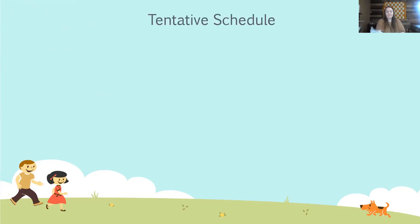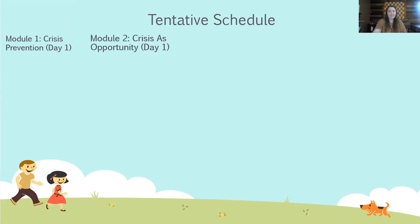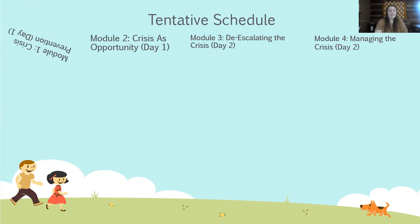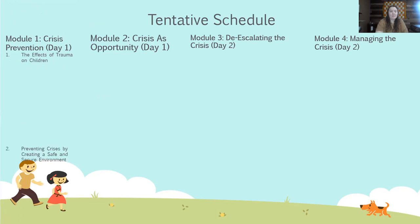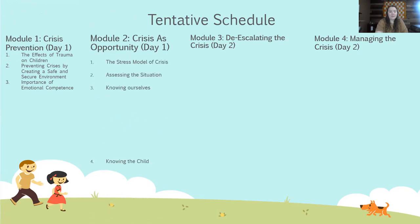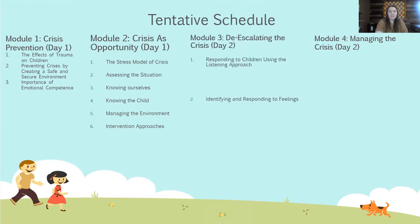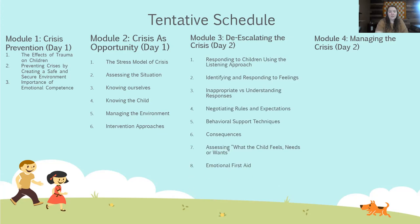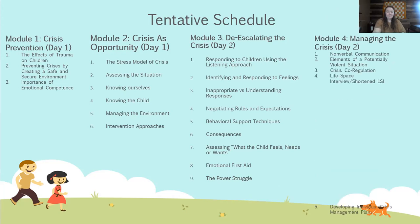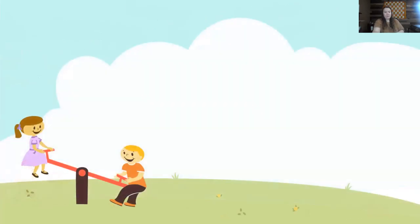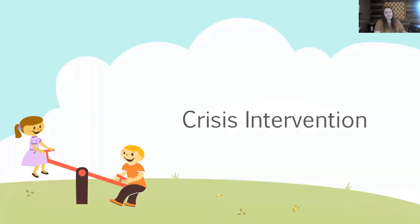This is our tentative schedule — it is a lot of information to get through, but we will be doing it all in one shot. For day one, module one is crisis prevention, and module two covers additional topics. Module three is on day two, and module four is the ending of day two. We will jump right into our first module: crisis intervention.